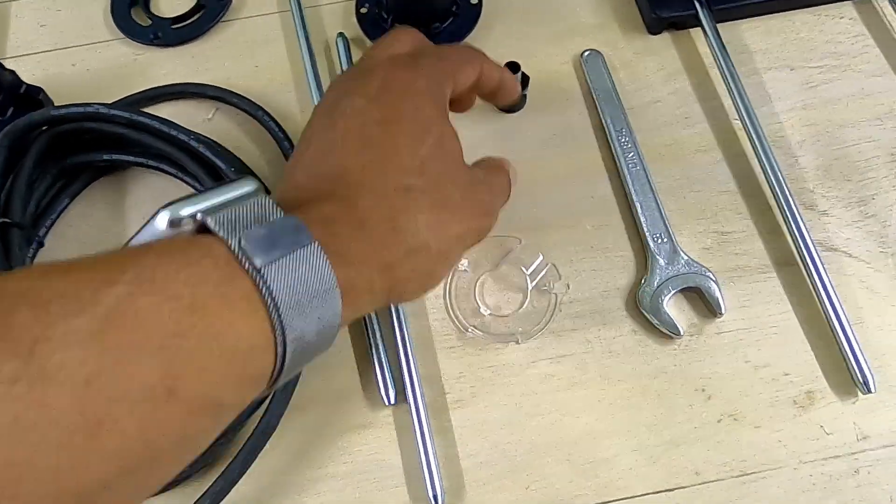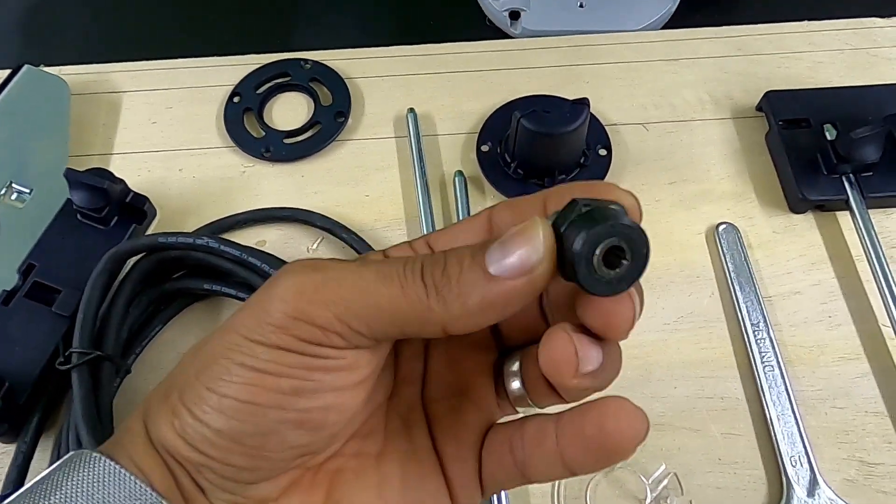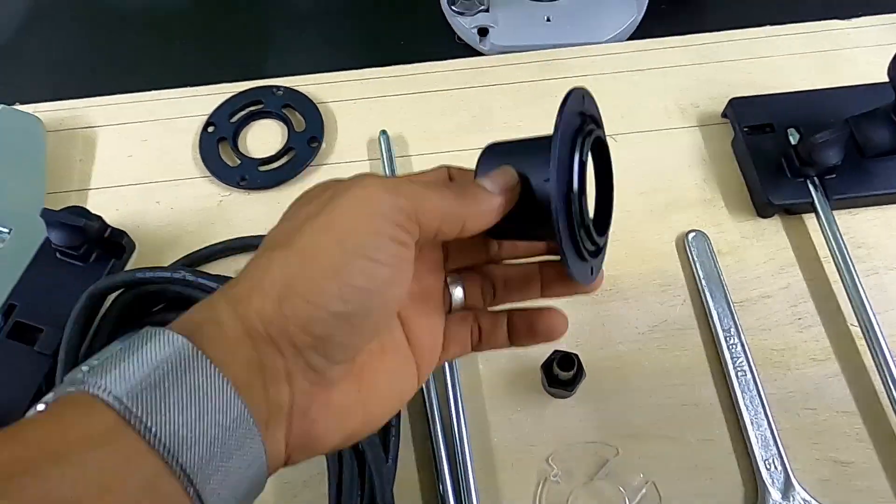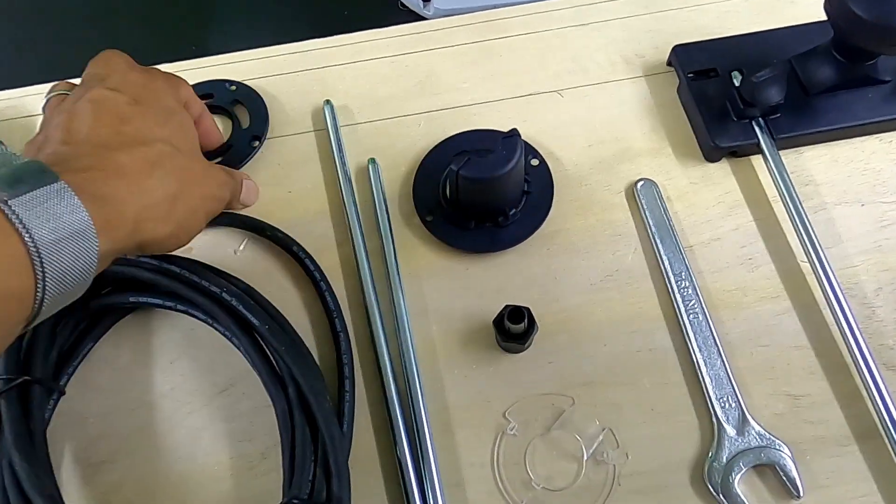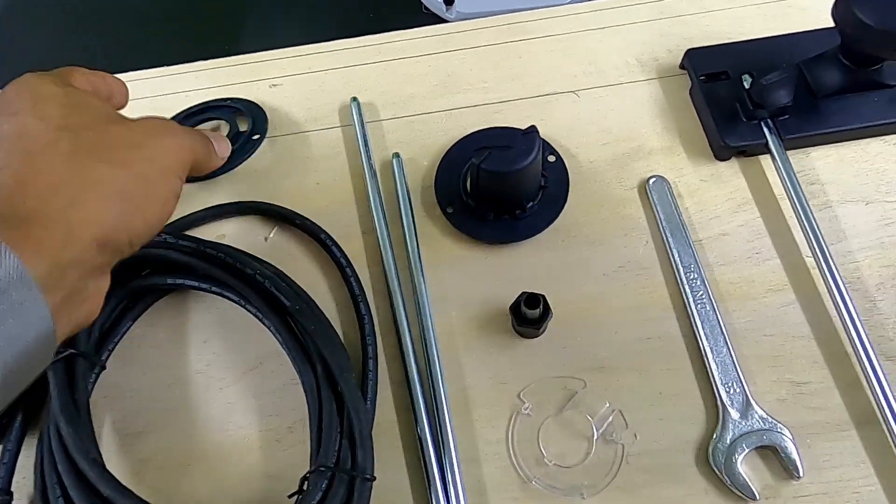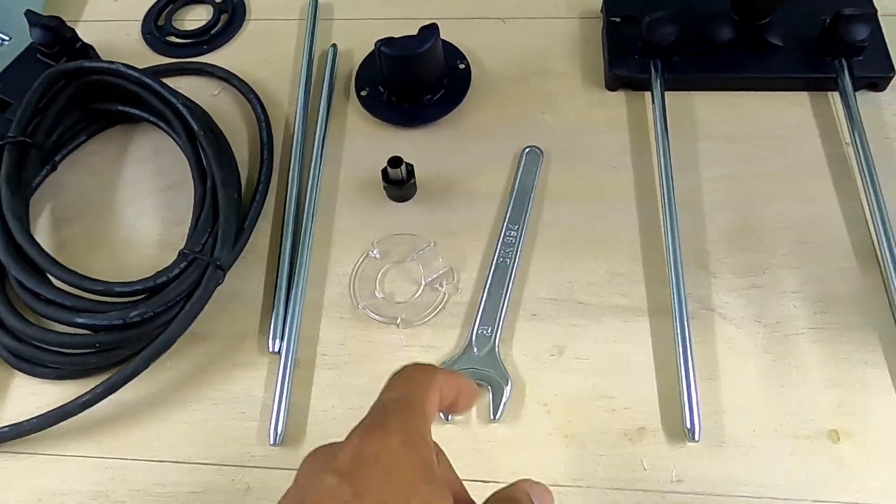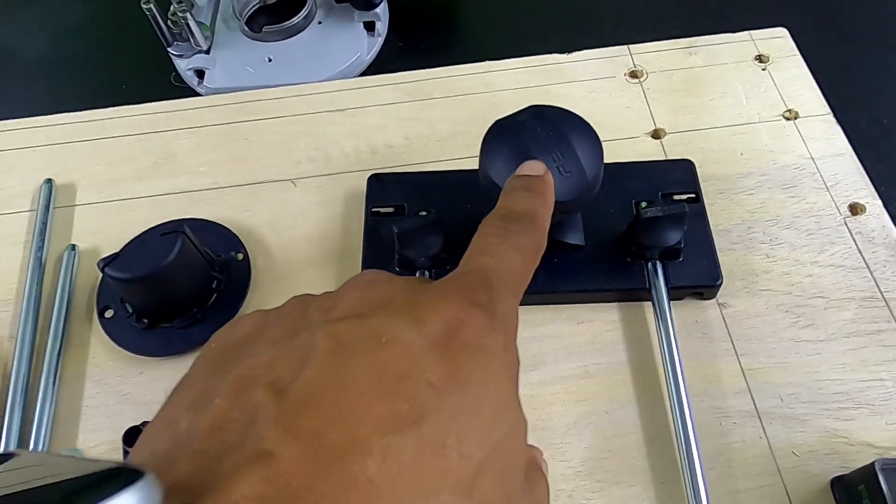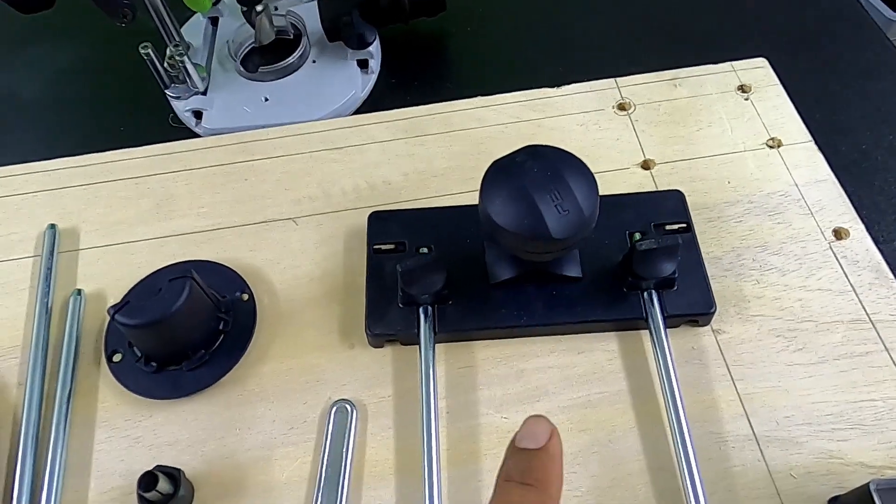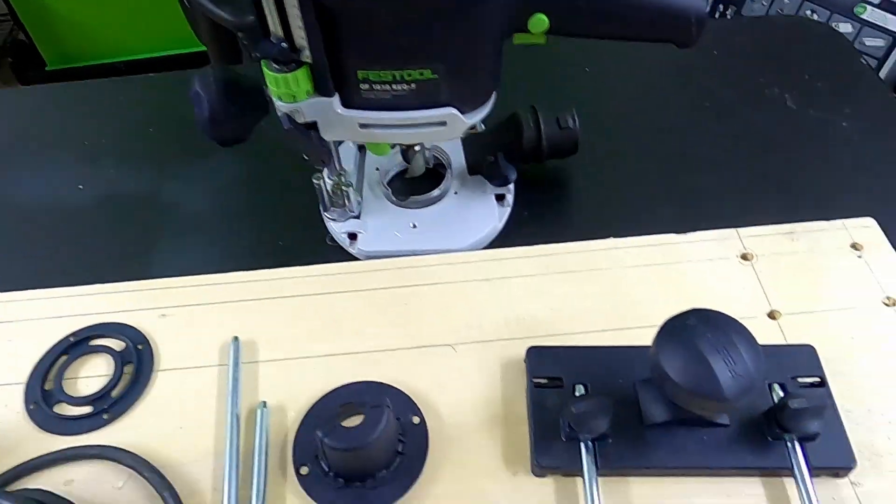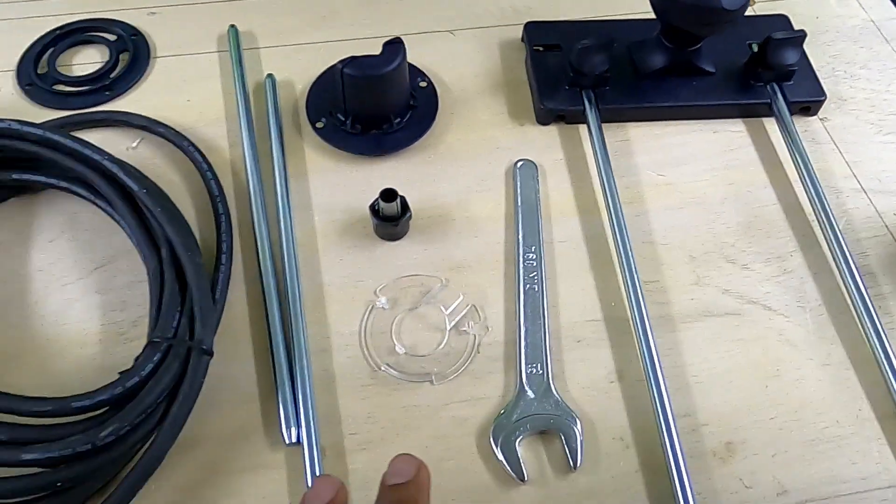The router includes an insert, an 8 millimeter collet, chip deflector, bushing guide, a 19 millimeter wrench, and the rail guide for running the router on a rail.